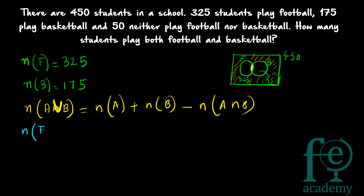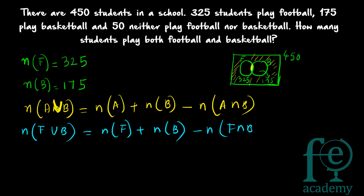Applying to our problem: N(F ∪ B) = N(F) + N(B) − N(F ∩ B), where F represents football and B represents basketball. This is the common formula we will use for all kinds of questions.